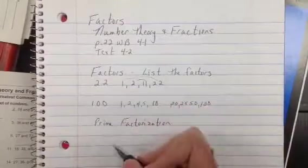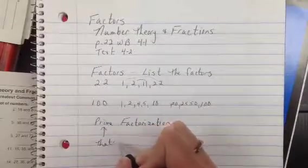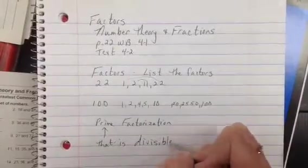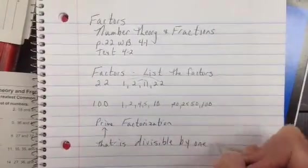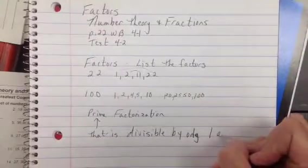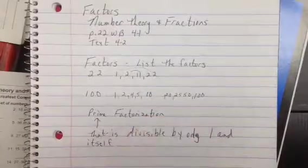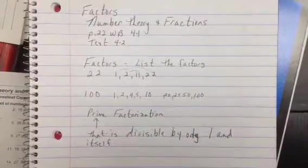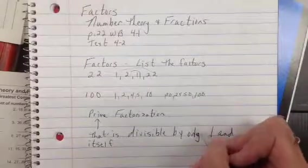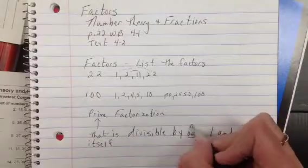Well, the first thing is what does prime mean? Prime is a number that is divisible by only 1 and itself. That's a prime number. So now 1 is not prime or composite because 1 is itself. So a number that's only divisible by 1 and itself.